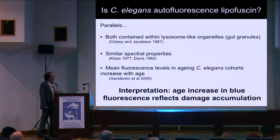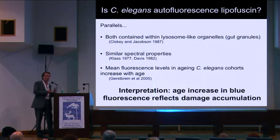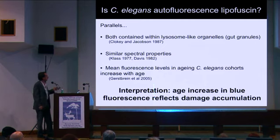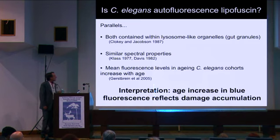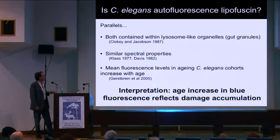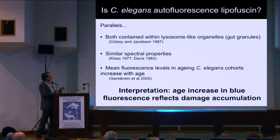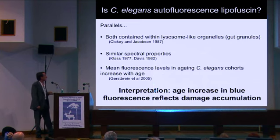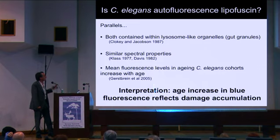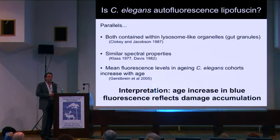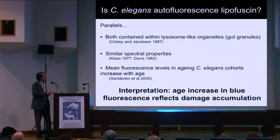The spectral properties are quite similar. And when you look at population cohorts of worms as they age, the blue fluorescence goes up with age. It would seem as if you have this product of damage accumulation appearing at higher and higher levels with age. This blue fluorescence is widely used as a marker for aging in C. elegans — there are some 50 or so papers that have been published now that use this method.